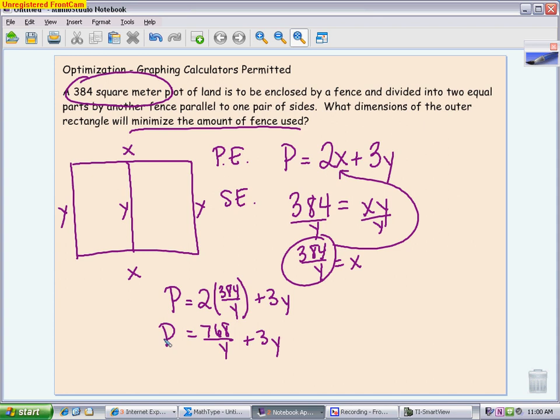So the derivative of P, you want to think of this as Y to the negative 1. You get negative 768 over Y squared plus 3, and we want to know when that equals 0. We're not going to consider 0 as a critical value because 0 will give me no amount of fencing. Moving terms around, I get 768 over Y squared equals 3.